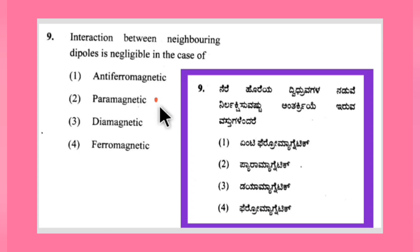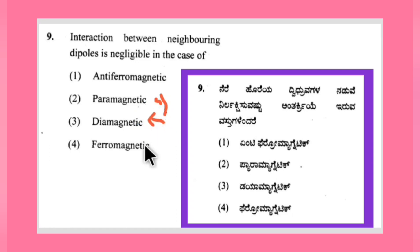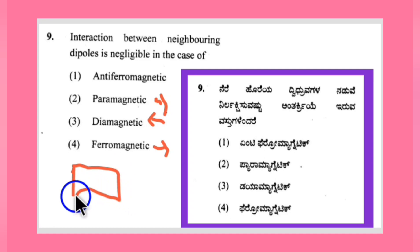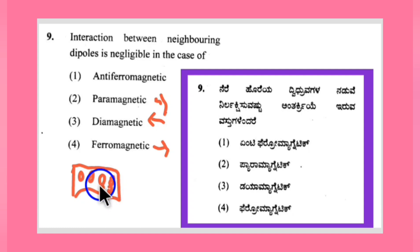Paramagnetic substances are feebly magnetized in the direction of the magnetic field. Diamagnetic substances are feebly magnetized in the opposite direction of the magnetic field. Ferromagnetic substances are very strongly magnetized in the direction of the magnetic field. In diamagnetic substances, before applying the field, dipoles show no interaction — it is zero — because for each up-spin electron there is a down-spin, so they cancel and no net dipoles exist.